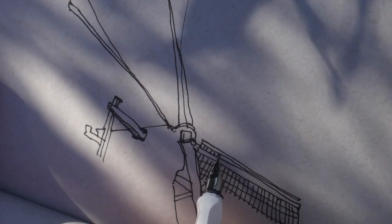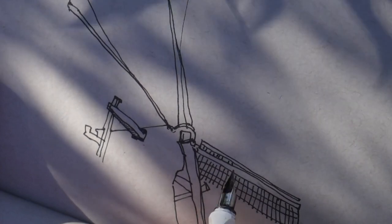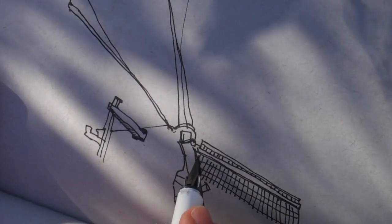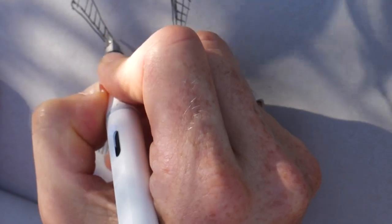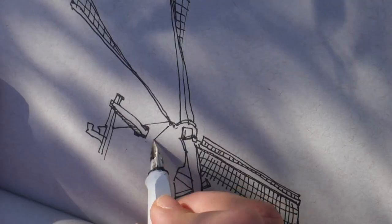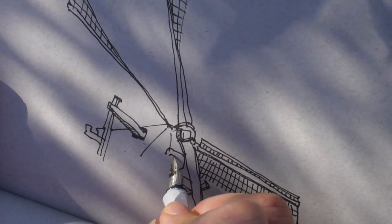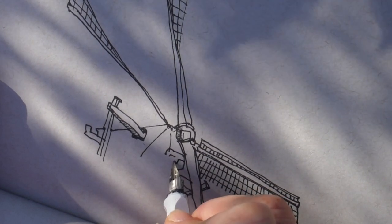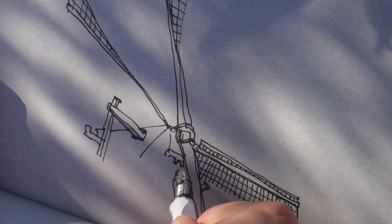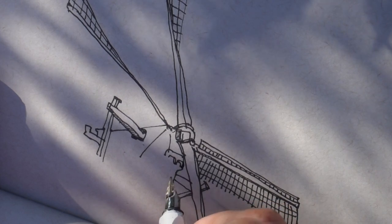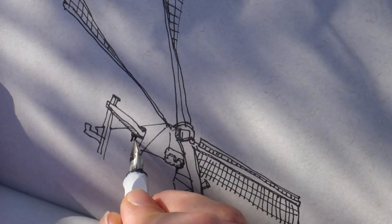Drawing this subject takes patience. A windmill's shape is so iconic, but when you're taking a closer look, suddenly there's so much to discover. Those wings are built out of so many slats, and with this lighting and distance, it's quite difficult to make out details and understand the construction fully.